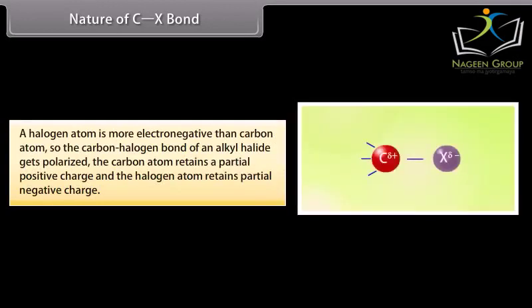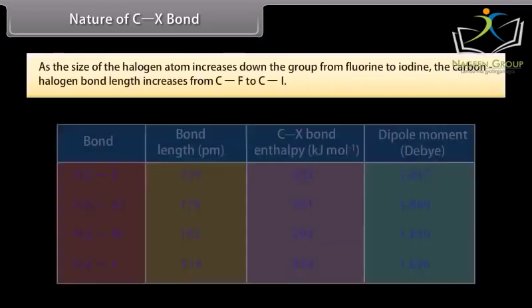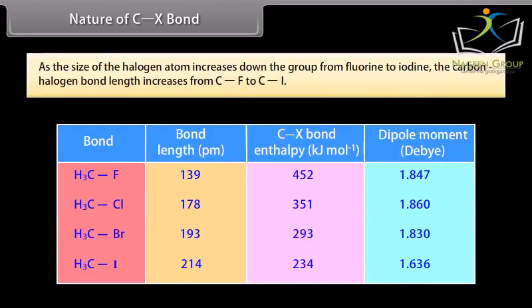Nature of C-X Bond. A halogen atom is more electronegative than a carbon atom, so the carbon-halogen bond of an alkyl halide gets polarized. The carbon atom retains a partial positive charge and the halogen atom retains a partial negative charge. As the size of the halogen atom increases down the group from fluorine to iodine, the carbon-halogen bond length increases from C-F to C-I.